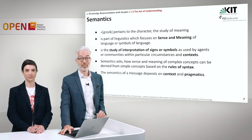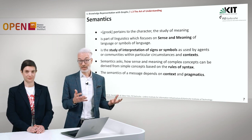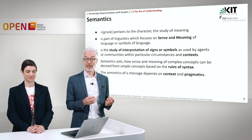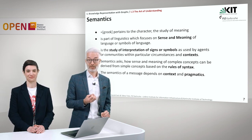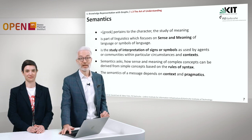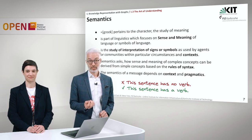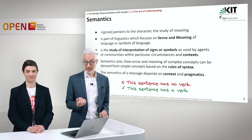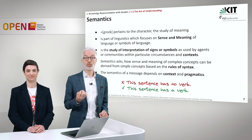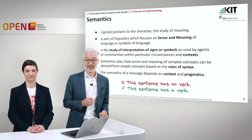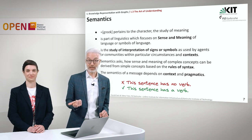The semantics of a message also depends on something — it does not stand by itself. We have already seen that there can be different contexts, and there is another thing called pragmatics. But first, let's look at an example. If I say 'this sentence has no verb,' it's syntactically correct. But the sentence we see here does have a verb, so it's semantically wrong. The second sentence, 'this sentence has a verb,' is syntactically and semantically correct.